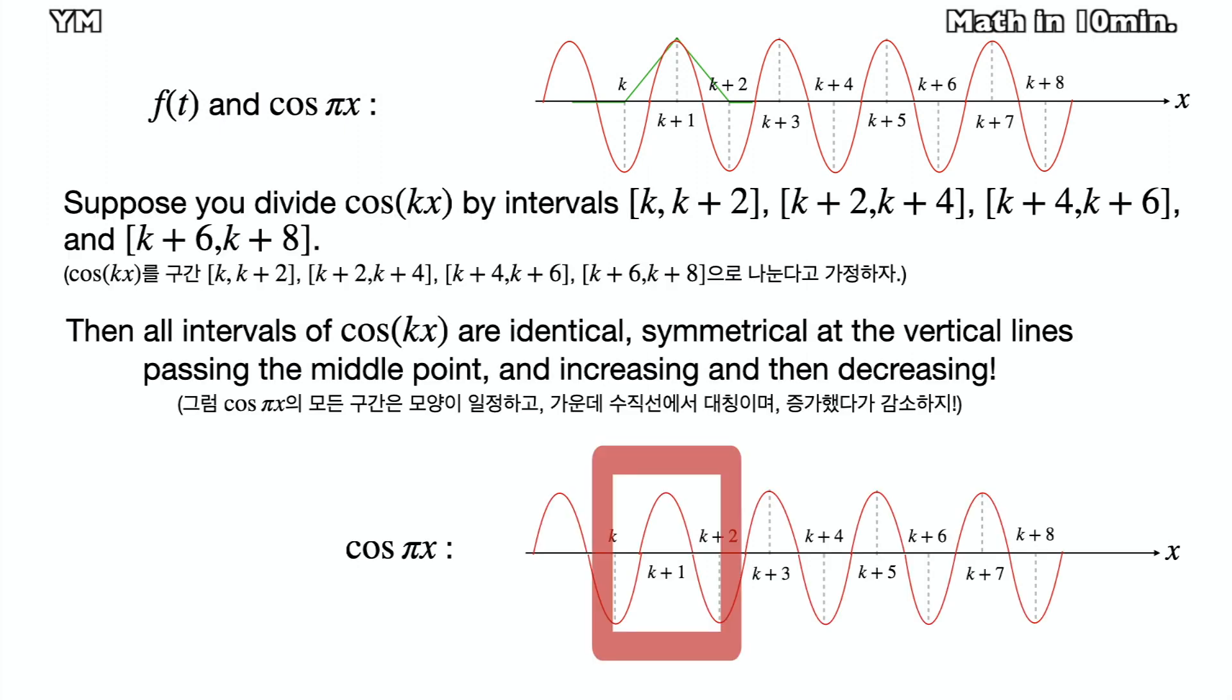Just look at the cosine pi x on the interval k, k plus 2. In this interval, cosine pi x is symmetrical at x equals k plus 1, and is increasing and then decreasing.